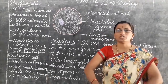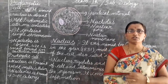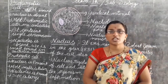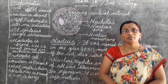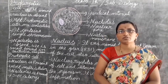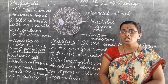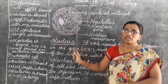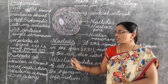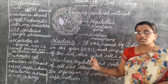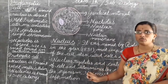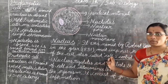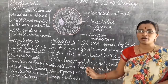The cell membrane gives protection to the entire cell and helps in the transport of substances. Similarly, the nuclear membrane also gives protection to the entire nucleus. The nucleus was discovered by Robert Brown in the year 1831.